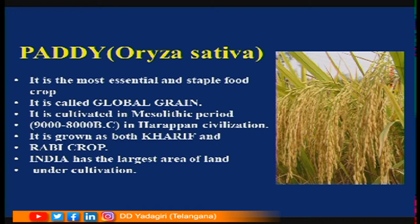The scientific name of paddy is Oryza sativa. It is called a global grain because it is consumed by people all over the world. Its cultivation started in the Mesolithic period, that is, in the Harappan civilization. It is grown as both Kharif and Rabi crop. Even in China and Japan this rice crop is grown. India has the largest area of land under paddy cultivation.